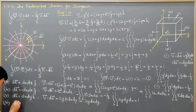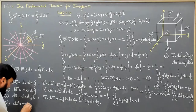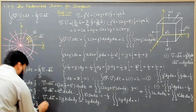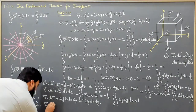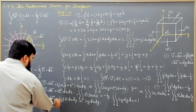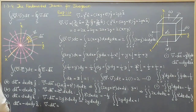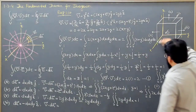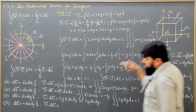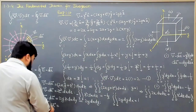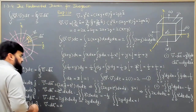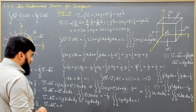For face 6, the area element is -dx dy ẑ, giving V·dA = -2yz dx dy. However, face 6 lies in the xy-plane at the origin, so z = 0. Substituting z = 0 makes V·dA equal to 0, and its integral is also 0.